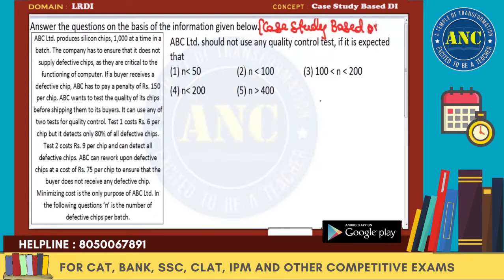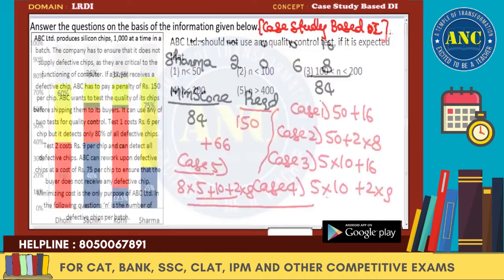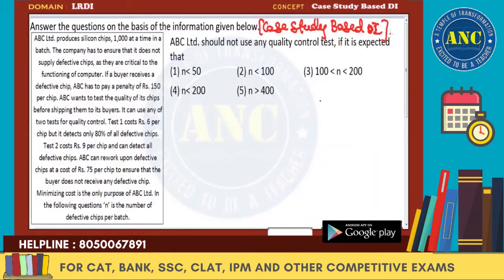The first set is based on a cumulative bar graph DI and the second one is based on a case study DI. Before solving, take one minute to read the question. There is a company, ABC Limited, which produces silicon chips — one thousand at a time in a batch.